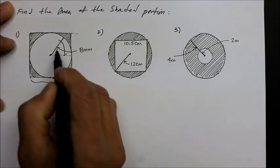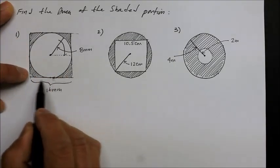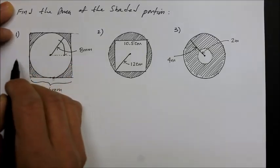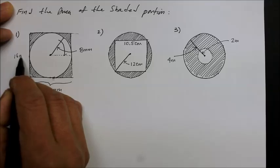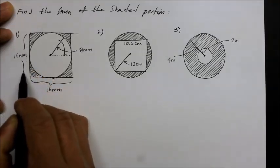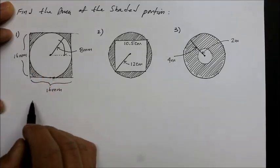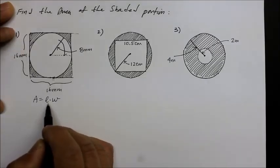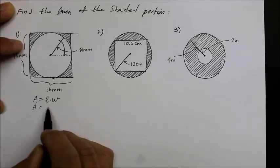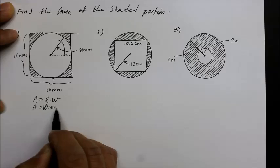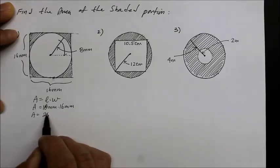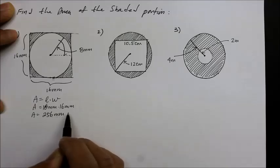Since it's a circle, and a square by definition has all equal sides, that means the other side is also 16 millimeters. Using that information, we find the area of the square: length times width, or side squared. So area of the square is 16 millimeters times 16 millimeters, which equals 256 millimeters squared.